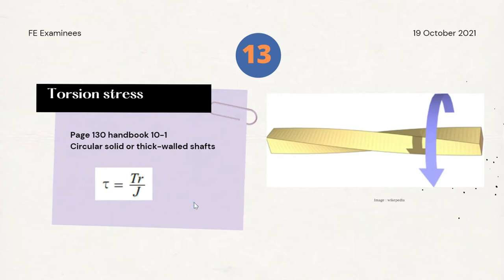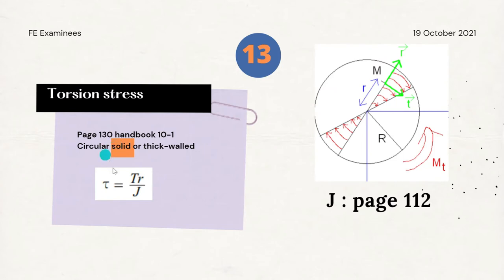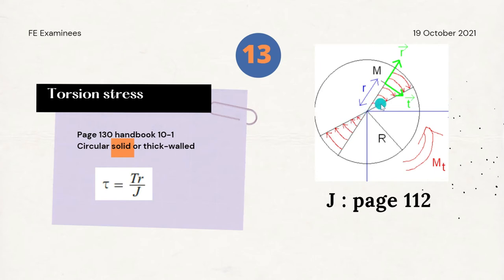The polar moment of inertia J describes how difficult it is to twist a section — if J is high, it's very difficult to twist; if J is low, it's very easy. For solid circular sections or disks, r in the equation is not constant; it varies from zero to the radius of the disk. When r equals zero, the stress is zero, and the tangential stress increases as we move outward. The maximum value occurs at the edge of the disk, where r equals the radius.